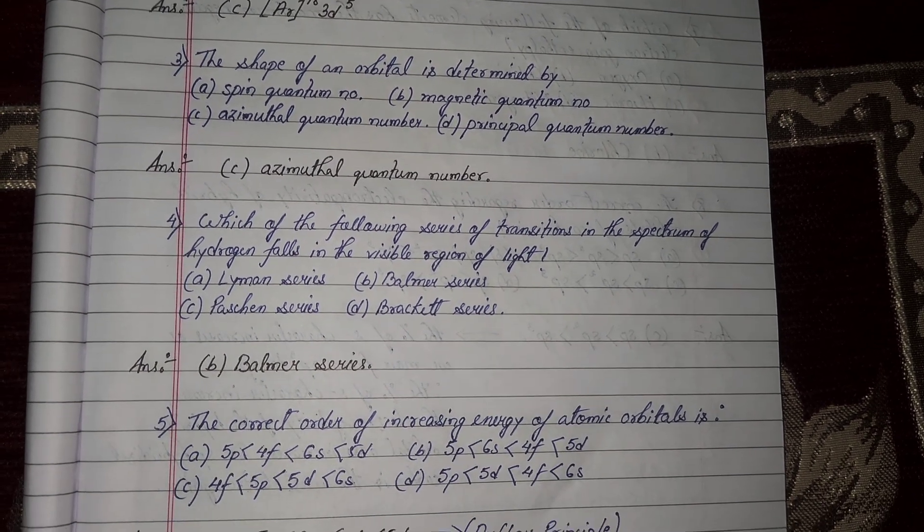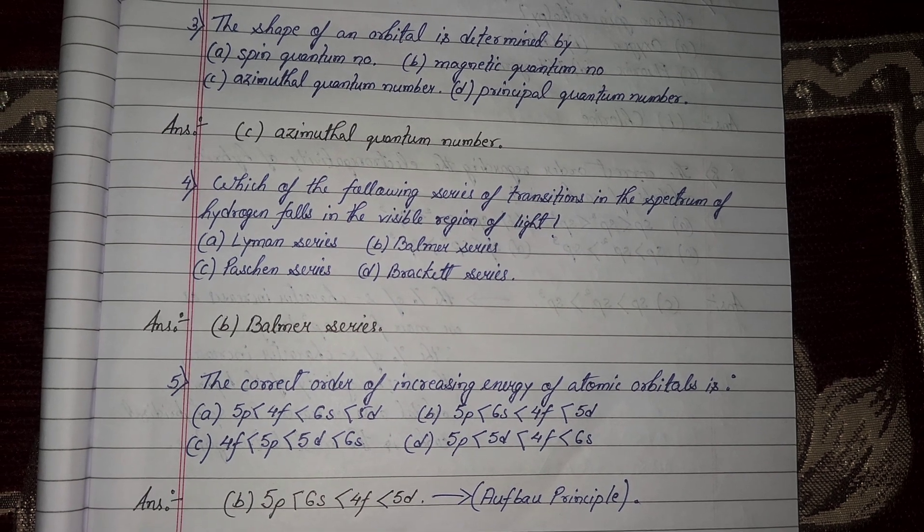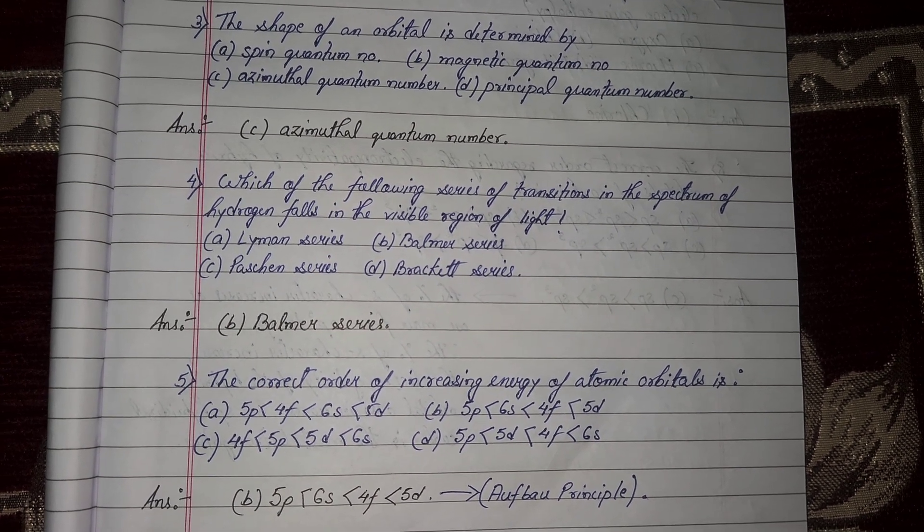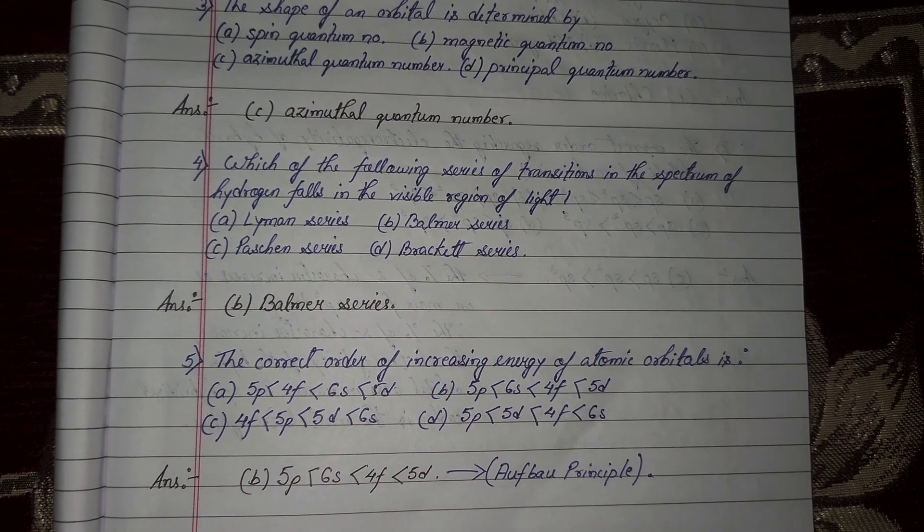Next question number 4, which of the following series of transitions in the spectrum of hydrogen falls in the visible region of light? So visible region, Balmer series.